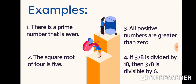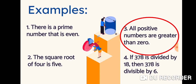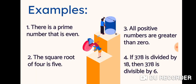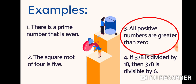Let us take a look back at our examples. Which of the following examples may be an example of a universal statement? Example number one — all positive numbers are greater than zero — is considered a universal statement. Looking back at our definition, a universal statement says a certain property is true for all elements in a set. This property is true for all positive numbers.